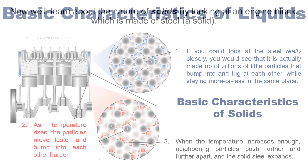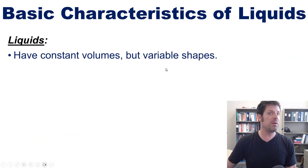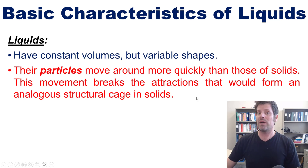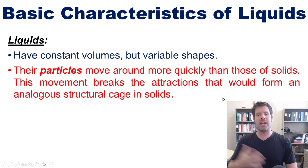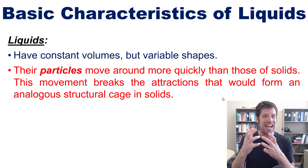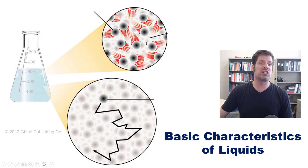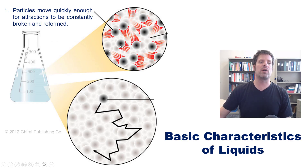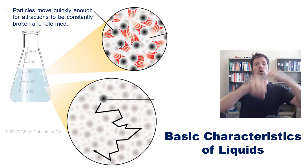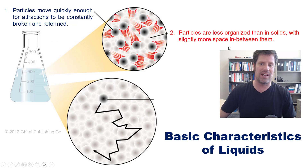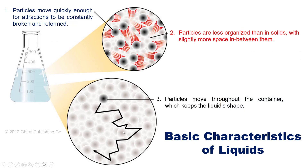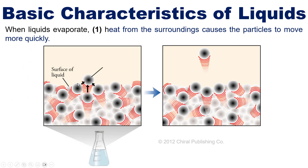Now to the basic characteristics of liquids. Liquids have constant volumes but variable shapes. Their particles move around more quickly than those of solids — this movement breaks the attraction that would form a structural cage as in solids, and as a result each particle in a liquid is constantly moving from one part of the liquid to another. Particles are less organized than in solids, with slightly more space between them, and they move throughout the container, which gives the liquid its variable shape.